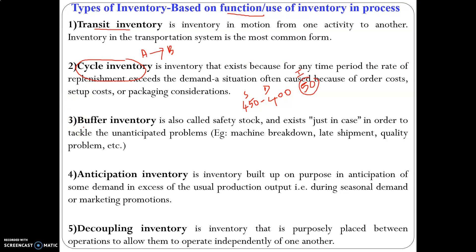The next one is buffer inventory. As the term 'buffer' indicates, it is a cushion — I am preparing a cushion to protect against unanticipated disasters. If you have unanticipated problems like machine breakdown, a late shipment, or a quality problem, you maintain excess quantities, and those are known as buffer inventory.